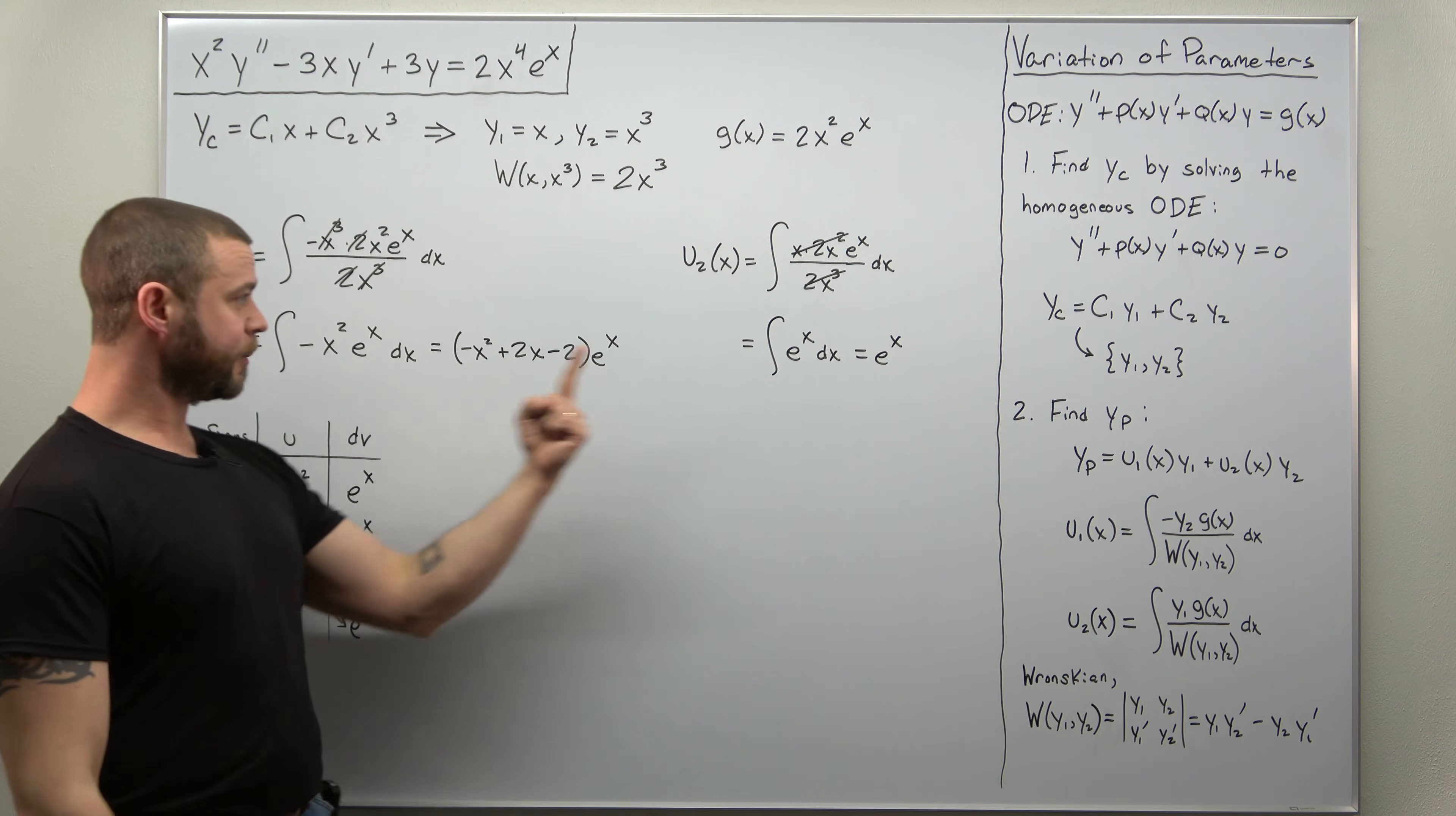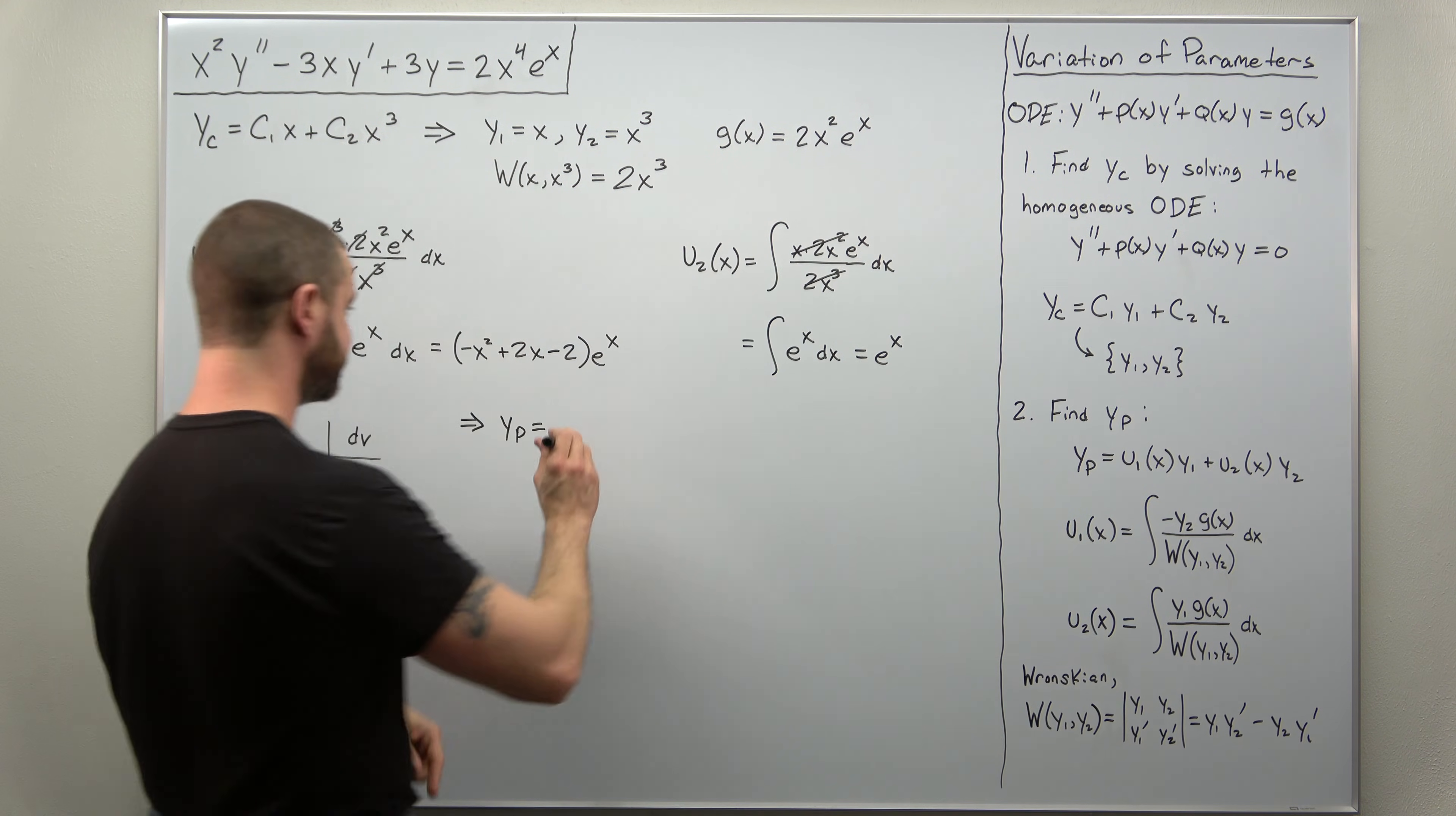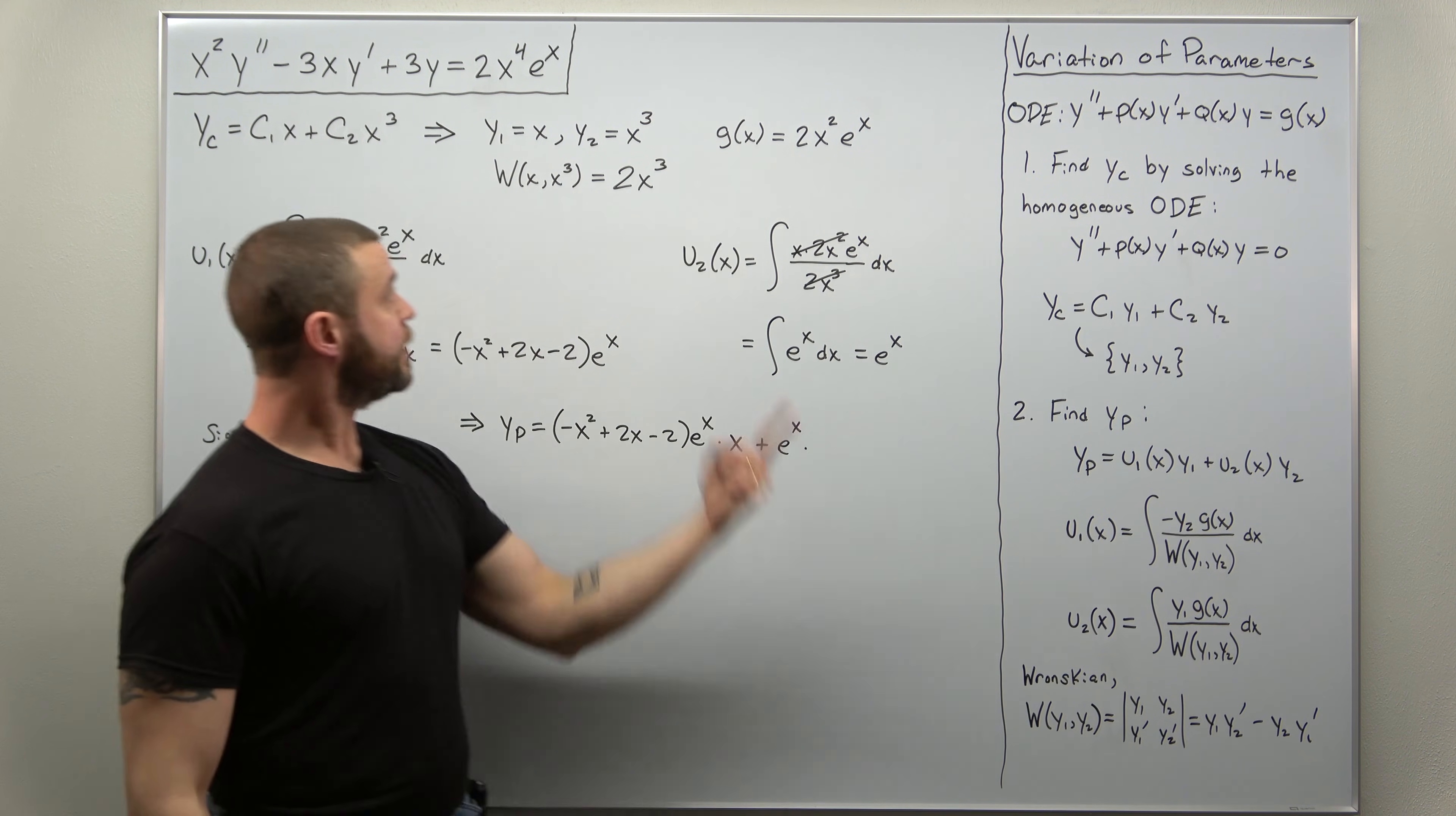Again, worth pointing out, in your formulas for U1 and U2 of X, after you've integrated, you don't need the plus Cs, the integration constants. All right, we can now write down what our particular solution comes out to. We have U1 of X. We have U2. And we already know what Y1 and Y2 are. So it's just a matter of plugging that in. And let's go ahead and write it out. Looks like we're going to get U1 of X. Negative X squared plus 2X minus 2 times E to the X. And don't forget, you have U1 times Y1. Y1 was X. And then we add to that U2, E to the X, times Y2. And we have Y2 as X cubed.